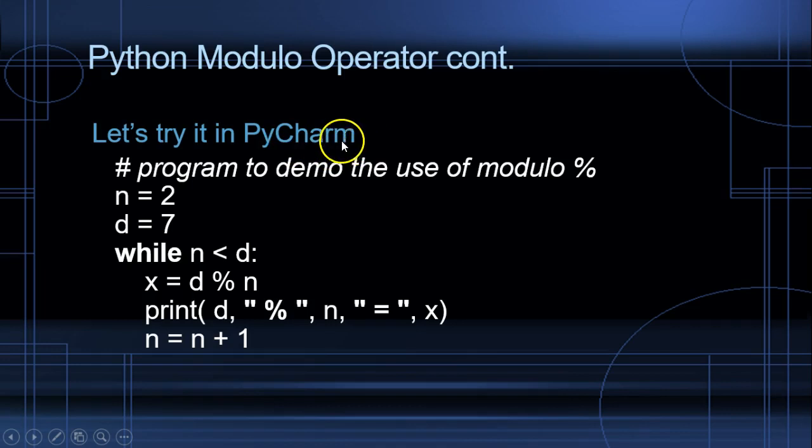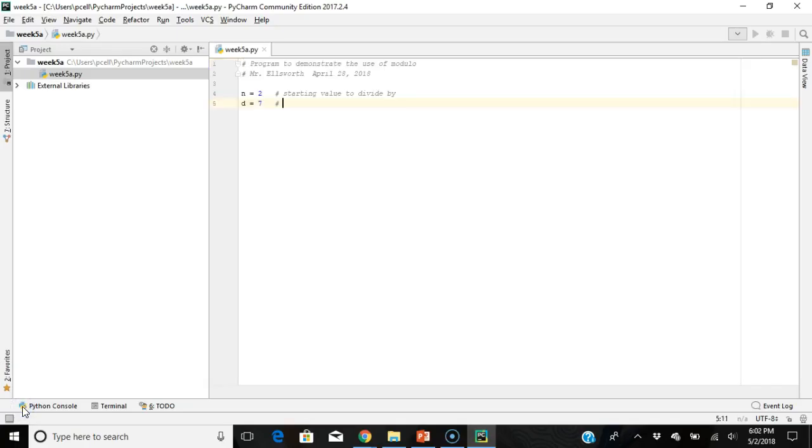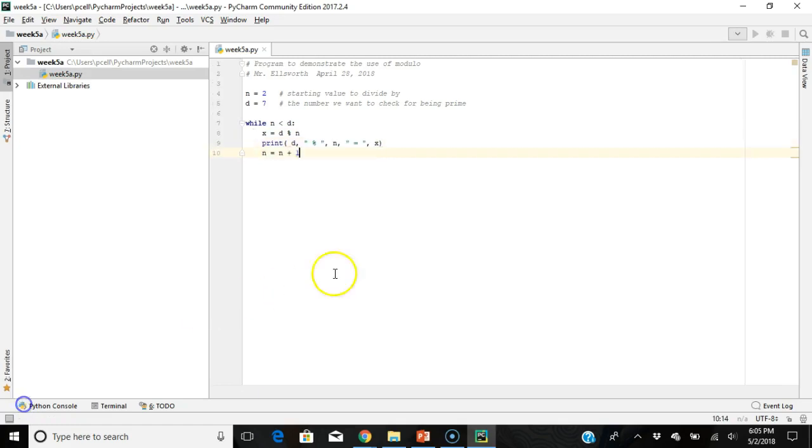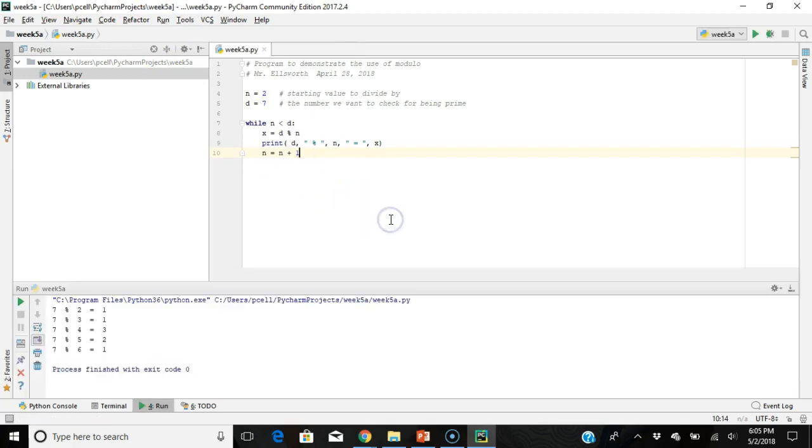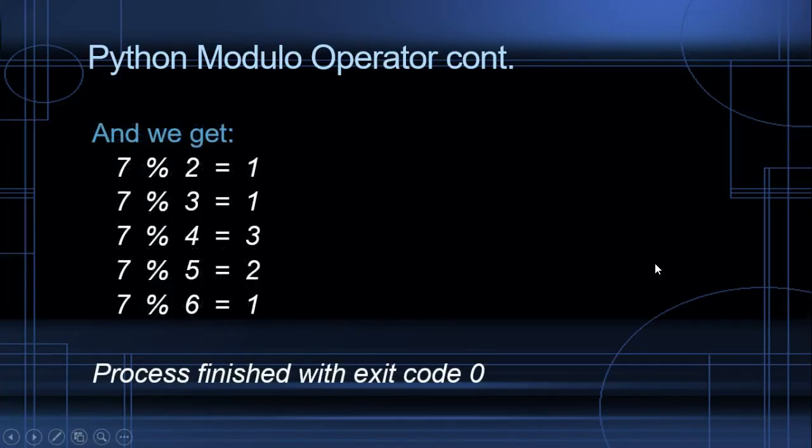So, let's go ahead and try it in PyCharm. Let's put this little program in and give it a try. Now, we can run the program. And there we are. You can see all of our remainder values, and since none of them are 0, then we can conclude that this is a prime number. And so, this is what we got on our display when we ran the program.